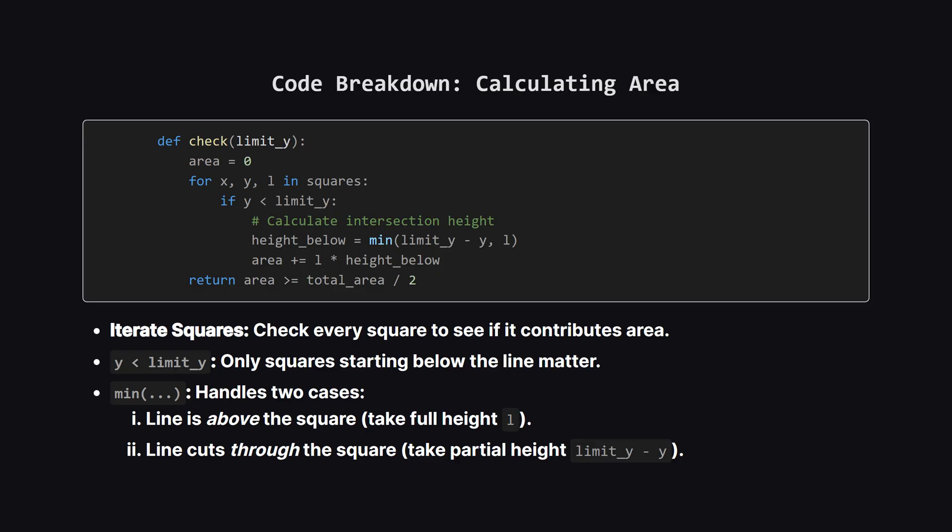The heart of this solution is the check function. It takes a potential y coordinate, which we call limit_y. We iterate through every single square. If a square starts below our line, it contributes some area. If the square is completely below the line, we take its full height. If the line cuts through it, we only take the height up to the line. The min function handles both cases elegantly in one step. We sum up these pieces and check if we've reached at least half the total area.